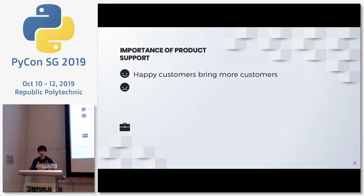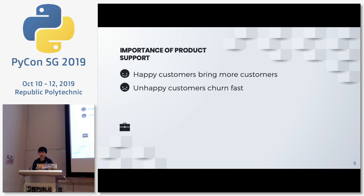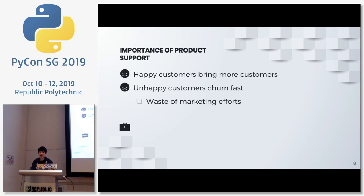For happy customers, they will definitely bring more customers, especially true for a new product. Early adopters will be the best advocates for your product if you act upon their feedback, giving them the sense that you are building and improving the product together. On the other hand, if customers are unhappy — maybe they enthusiastically submit bug reports but you never get back to them, or you drop support for their version without mentioning it in documentation — they will churn fast, wasting your marketing efforts, and may even lose trust in the product or company.